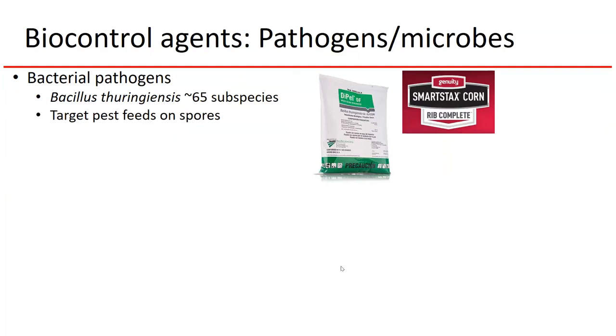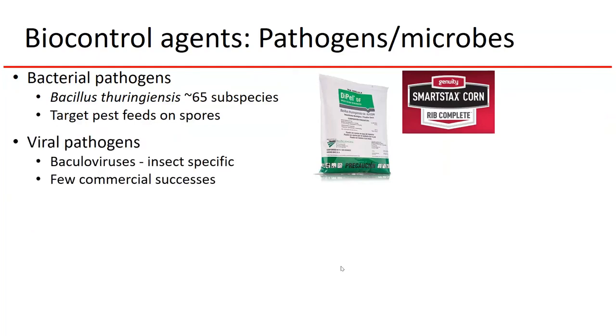One of the most common BT applications is Dipel, probably the most widely used BT product on the market. It's active against caterpillars and is applied like any other synthetic insecticide — mixed in a spray tank and sprayed over crops. You need relatively good coverage because the target species has to consume those spores before they die. It works best against smaller larvae, which are more susceptible to the toxin. This is also the same technology — the same genes — introduced to transgenic crops like BT corn and BT cotton.